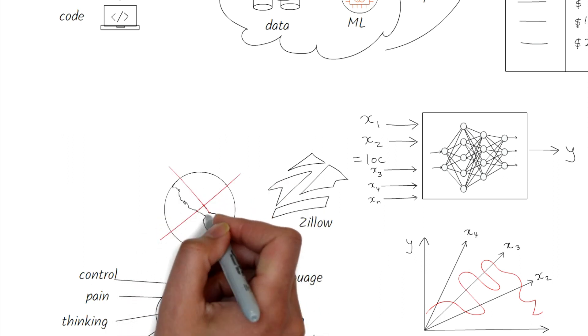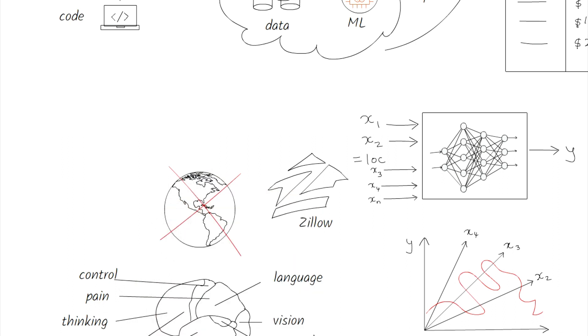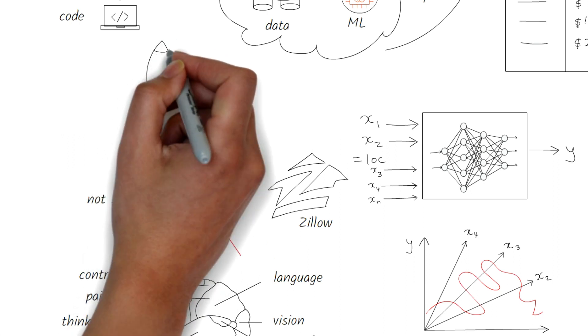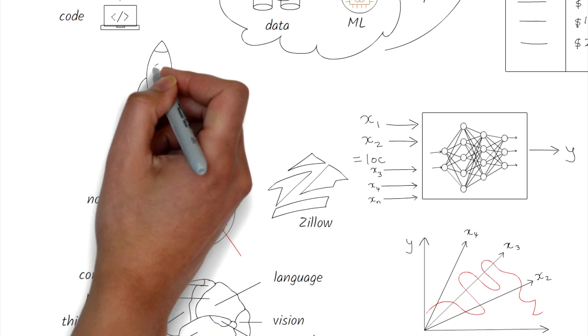Imagine that Zillow wanted to expand to other places in the world. Then this model will not work. By scoping down the business context within which the model will operate, the data scientist can create a set of simpler models that can be tied together with simple logic outside of the models.